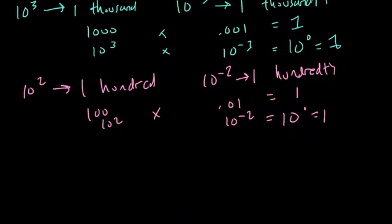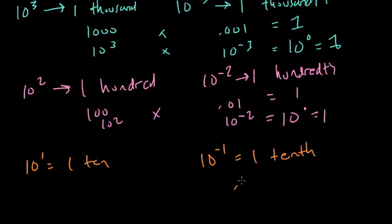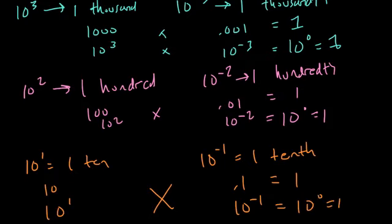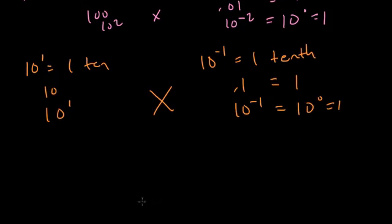Here, 10 to the 1st times 10 to the negative 1st. This is just 10, or 1 tenth - 0.1, or 10 to the negative 1. Multiply 10 by 0.1, or 10 to the 1 times 10 to the negative 1, and either way we'll get 1.